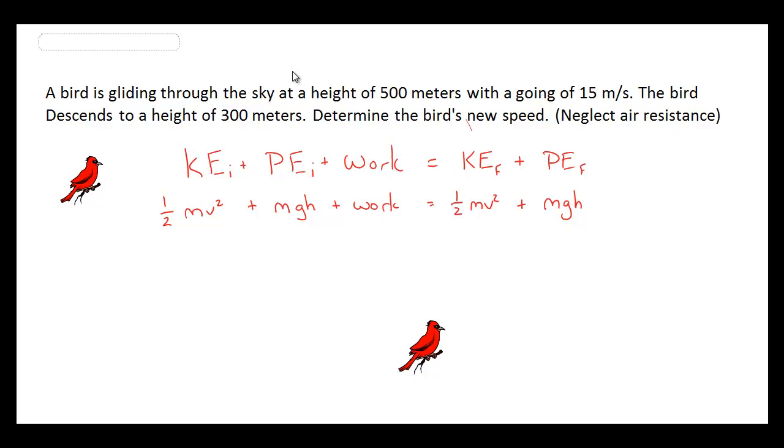We're looking at the energy initially in a system, and we'll be comparing it to how it's finally expressed, either in kinetic or potential energy. The problem begins with a bird that is gliding through the sky at a height of 500 meters, and it is going with 15 meters per second velocity.